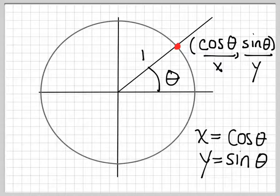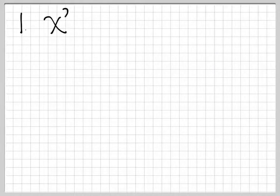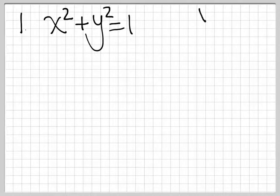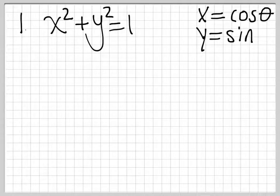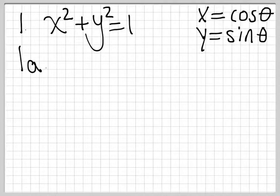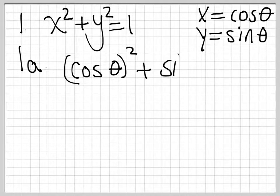Let's talk about things we learned last time that we can now upgrade. One of the things we talked about is the equation for the unit circle: x squared plus y squared equals 1. Remember, x is cosine theta and y is sine theta. So if we replace x and y with cosine theta and sine theta, our new equation is cosine theta squared plus sine theta squared equals 1.